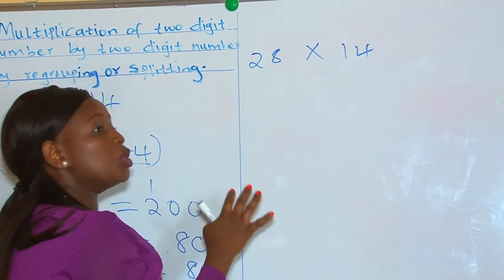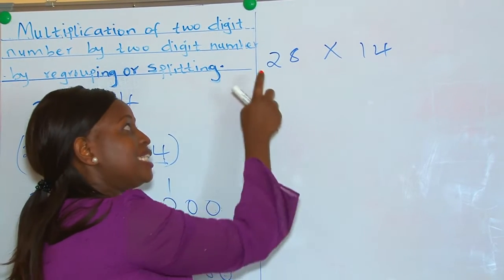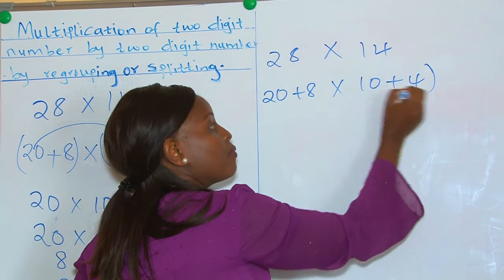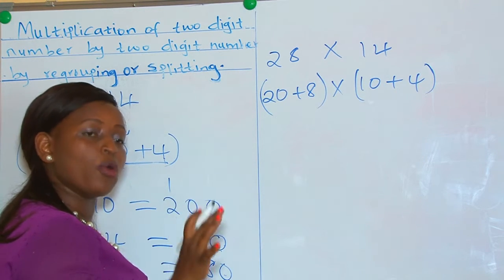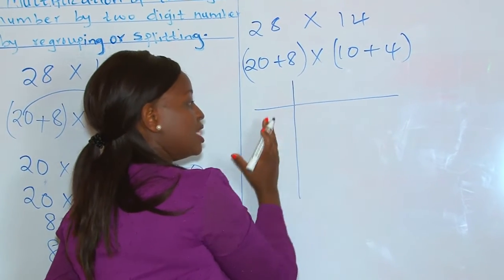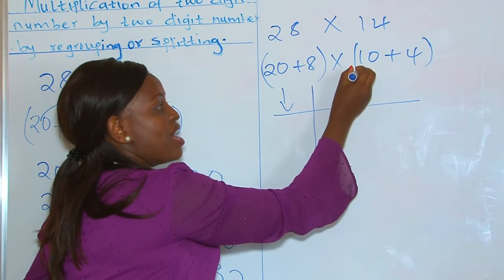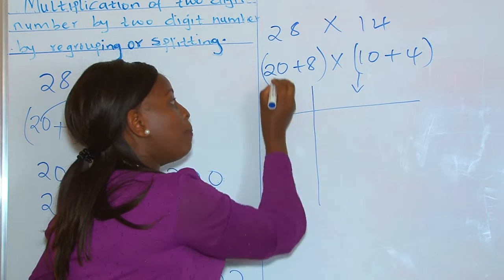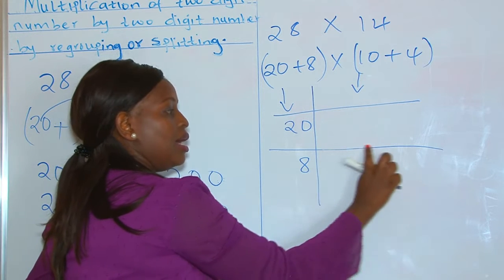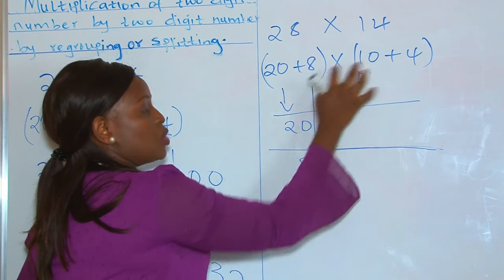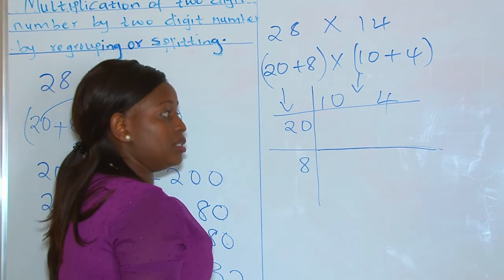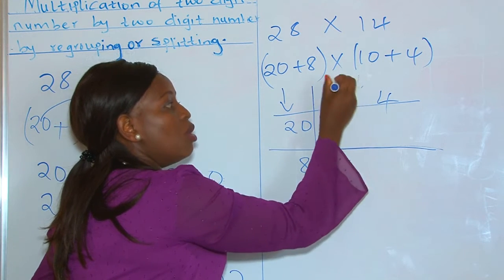When we are regrouping, we regroup according to place value. We count the number 28 — the digits 8 and 2 — and group them according to powers of 10 or place value, which is 20 plus 8 multiplied by 10 plus 4. But this time around, we tabulate them and present the numbers using a table. On this side we put 20 and 8 arranged horizontally, and 10 and 4 arranged vertically.